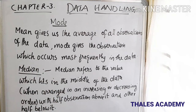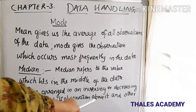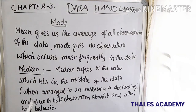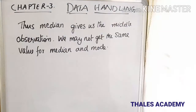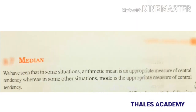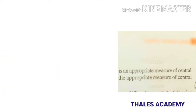Next is median. Median refers to the value which lies in the middle of the data when arranged in an increasing or decreasing order, with half of the observations above it and the other half below it. We have seen that in some situations, arithmetic mean is an appropriate measure of central tendency, whereas in some other situations, mode is the appropriate measure.